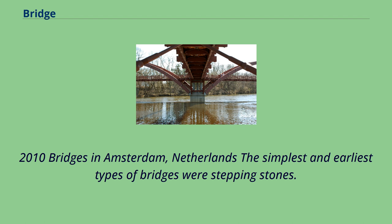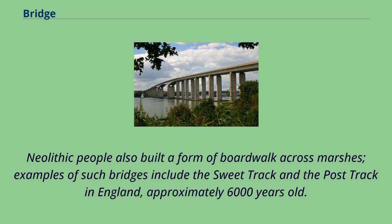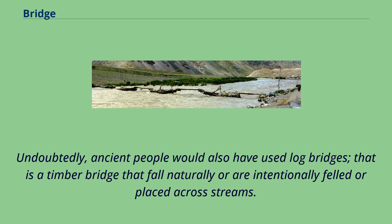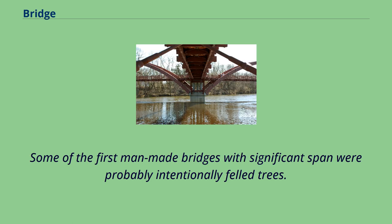The simplest and earliest types of bridges were stepping stones. Neolithic people also built a form of boardwalk across marshes. Examples of such bridges include the Sweet Track and the Post Track in England, approximately 6,000 years old. Undoubtedly, ancient people would also have used log bridges — timber bridges that fall naturally or are intentionally felled or placed across streams. Some of the first man-made bridges with significant span were probably intentionally felled trees.